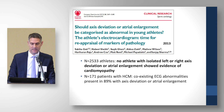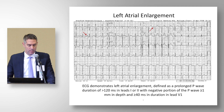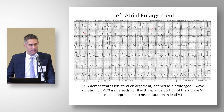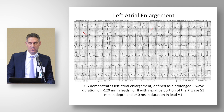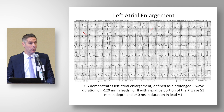This is an example of left atrial enlargement. In lead two, the P wave is greater than 120 milliseconds or three small boxes, and in V1 there's a negative portion of the P wave greater than one millimeter in depth and more than 40 milliseconds in duration. Many people over-call left atrial enlargement by looking only at V1. Our criteria requires both: the wide P wave in lead one or two and the negative portion in V1.